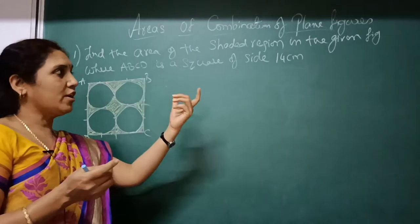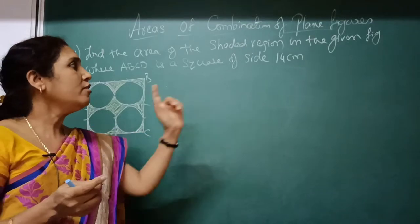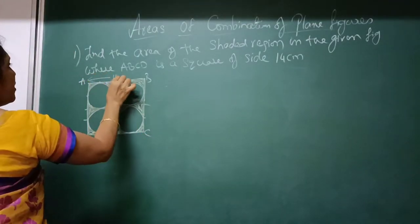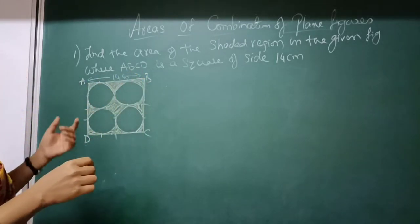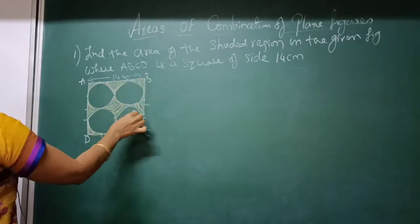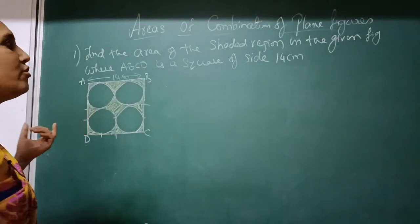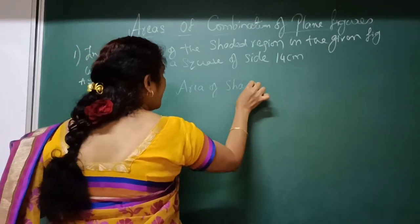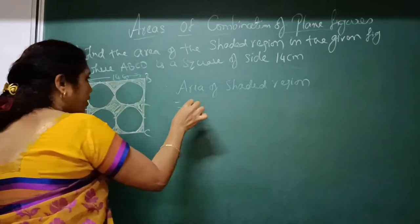Find the area of the shaded region in the given figure where ABCD is a square of side 14 cm. See this is 14 cm. You will have to find the area of the shaded region. See this is the shaded region. You are able to see the shaded region. How are you going to find the area of shaded region?